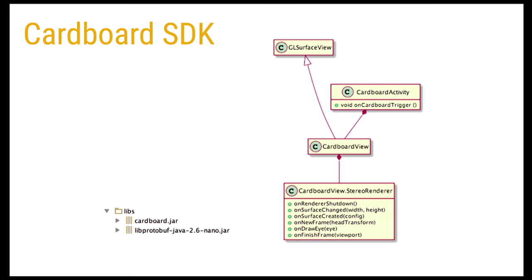Cardboard SDK — I promised it wouldn't be much more difficult, and it's not. There are a few new methods in the stereo renderer, which is the equivalent of the renderer we just looked at. You might notice at the bottom here that we are still using jars in the libs folder — somebody talk to that team and get them on Gradle.